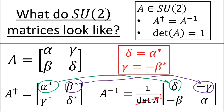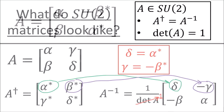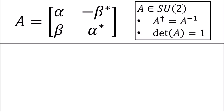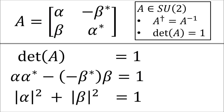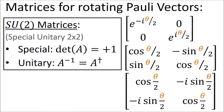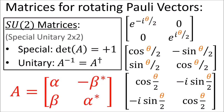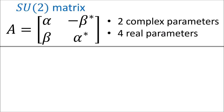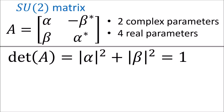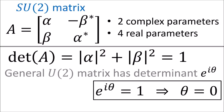So all SU(2) matrices take this form, where the determinant equals 1, meaning the squared magnitude of alpha plus the squared magnitude of beta equals 1. The three rotation matrices we saw earlier match this form, so they are indeed SU(2) matrices. Also note that SU(2) matrices have two complex parameters, or four real parameters. However, since the determinant is forced to be 1, this gives one extra constraint, reducing the four real parameters to three real parameters, as there are three independent planes of rotation that we can choose angles for.